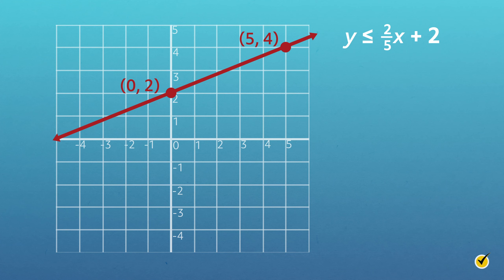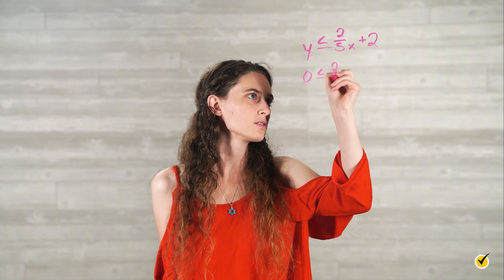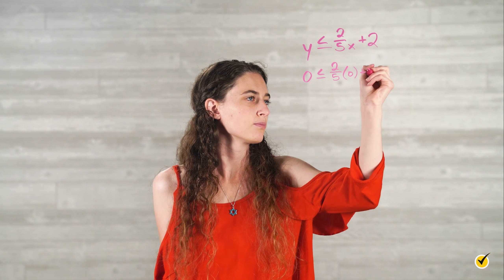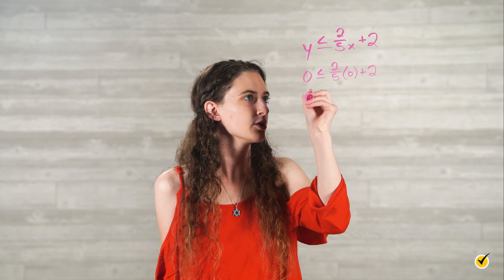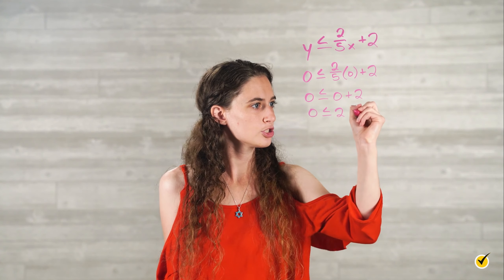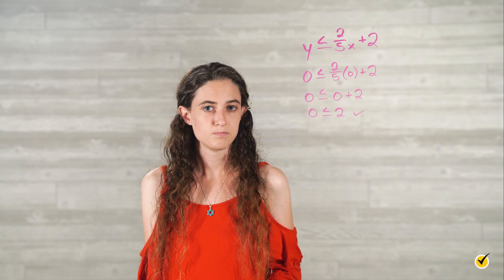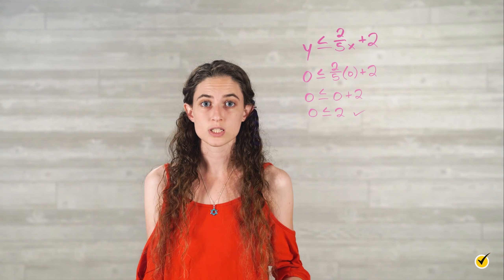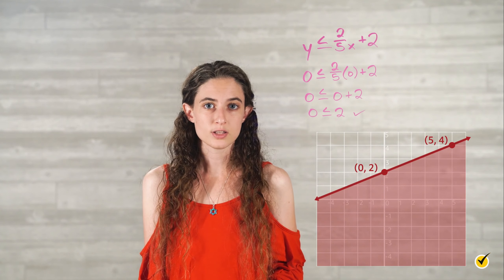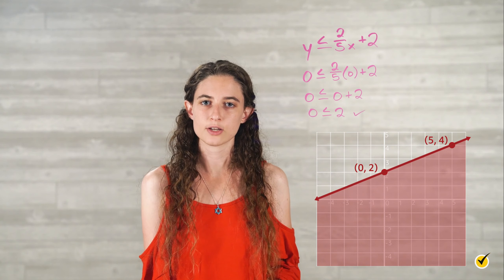Next, substitute the origin (0, 0) into the inequality as a test point. Plugging in 0 for x and y, we get 0 is less than or equal to 2/5 times 0 plus 2, which simplifies to 0 is less than or equal to 2 — which is true. Since the origin satisfies the inequality, the values to the right of the graphed line are solutions. The finished graph has a solid line with a shaded region to its right, and all possible solutions are points to the right of or on the line.